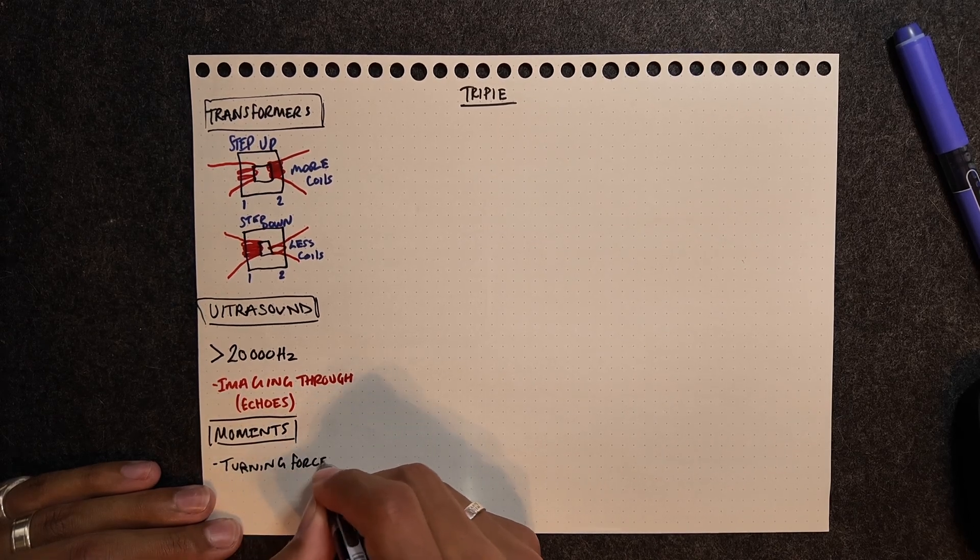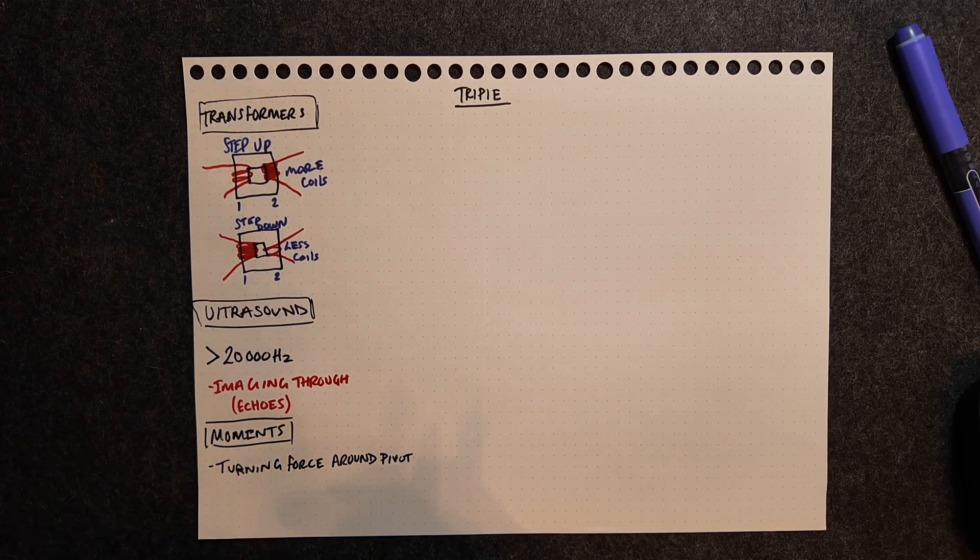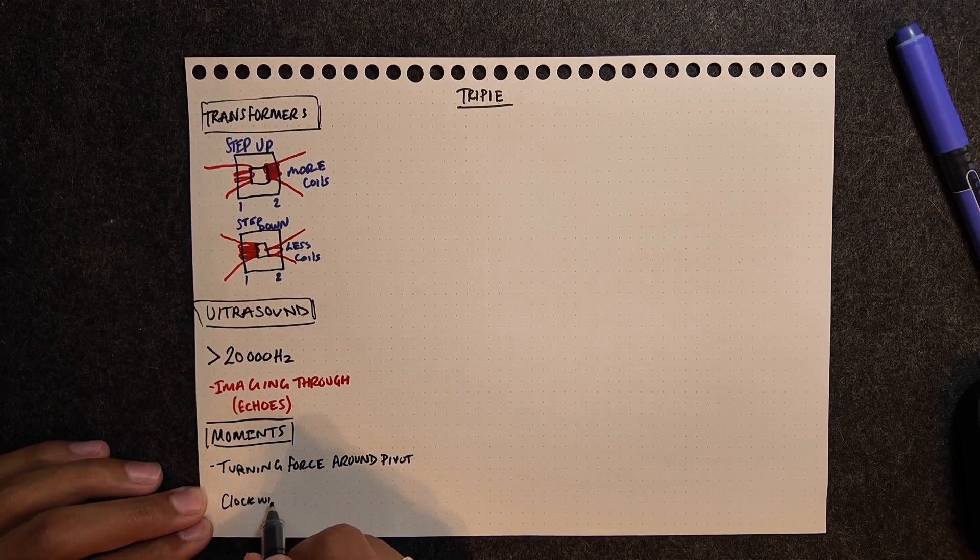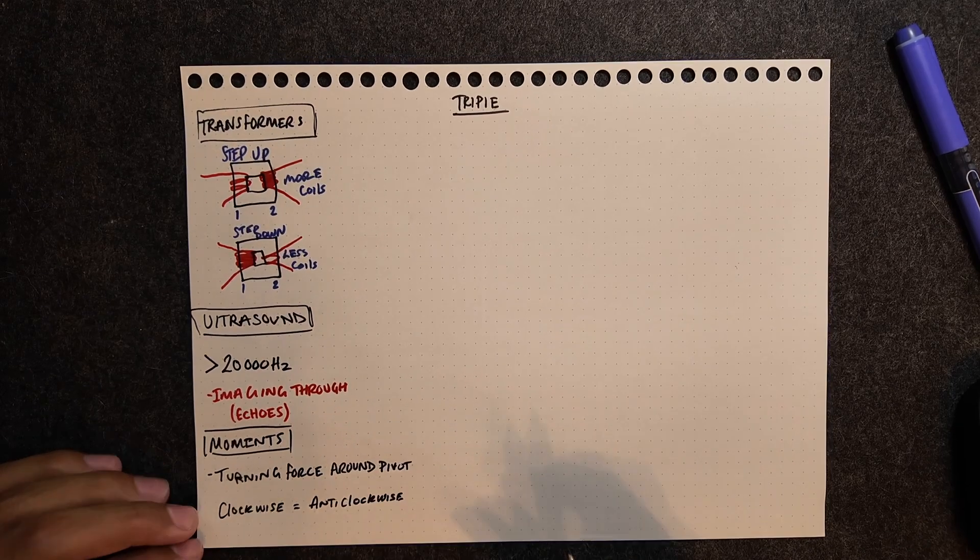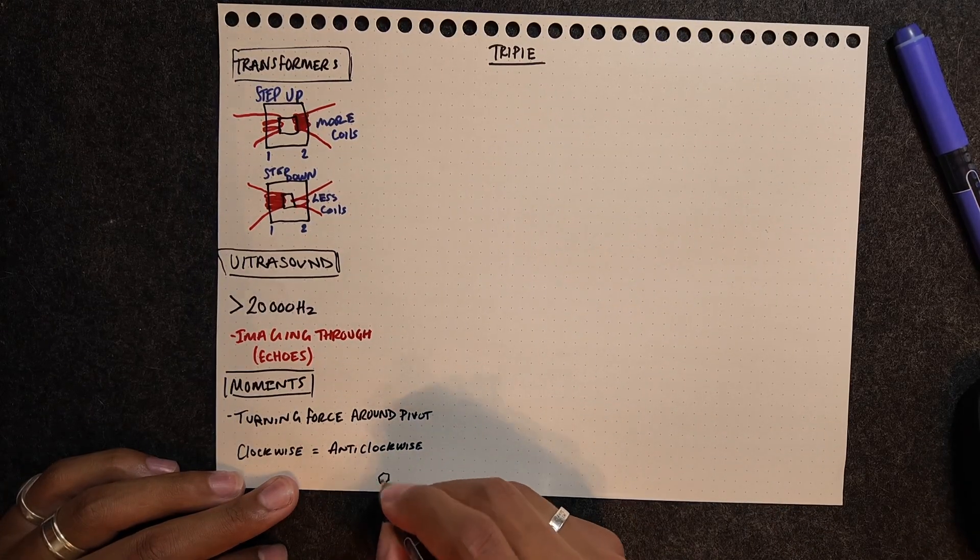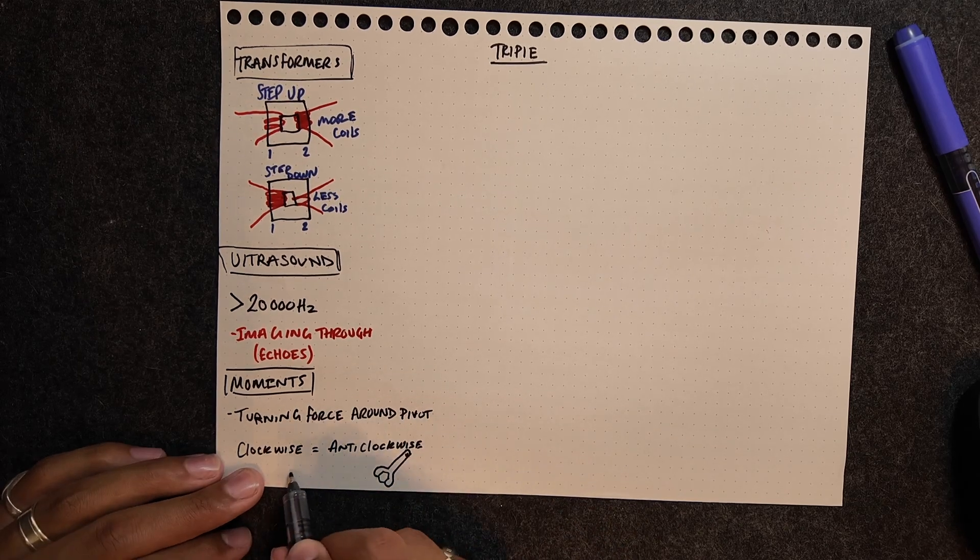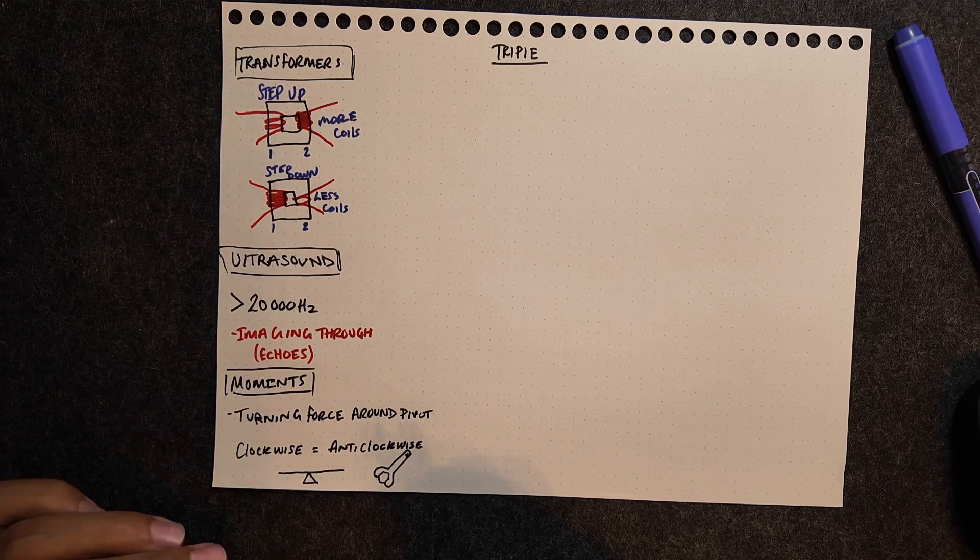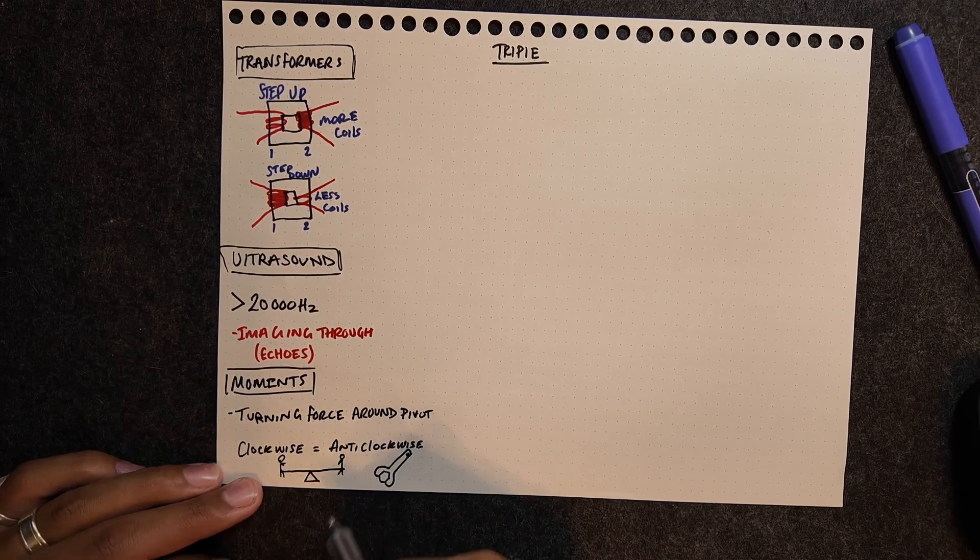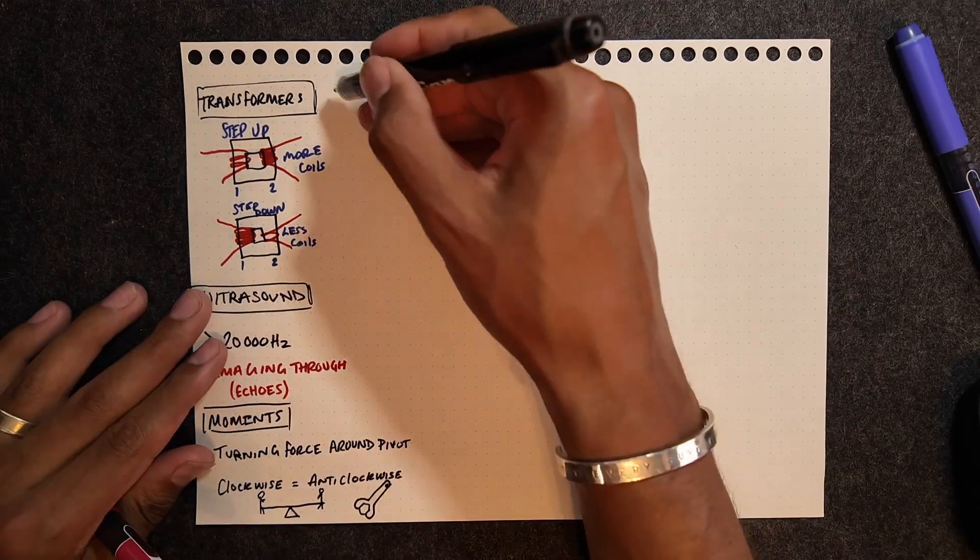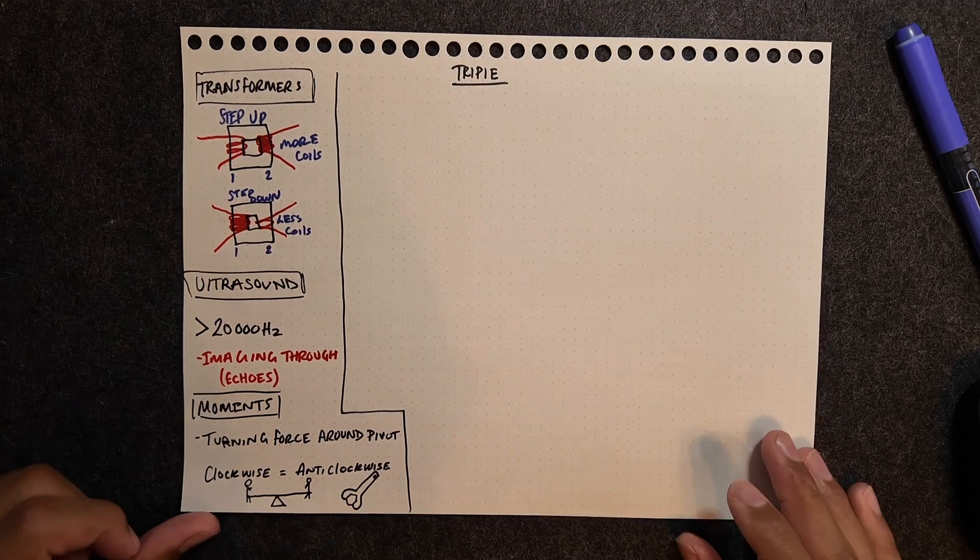A section that is in triple for higher is to do with moments, which refer to the turning effect of a force around a pivot. According to the principle of moments, if an object is balanced, then you're going to have the clockwise moments equaling the anti-clockwise moments around that pivot. Examples can be like a spanner turning and a seesaw turning. You've got that pivot point in the middle there, or you've got the pivot point where the screw or the nut is that you're trying to turn.